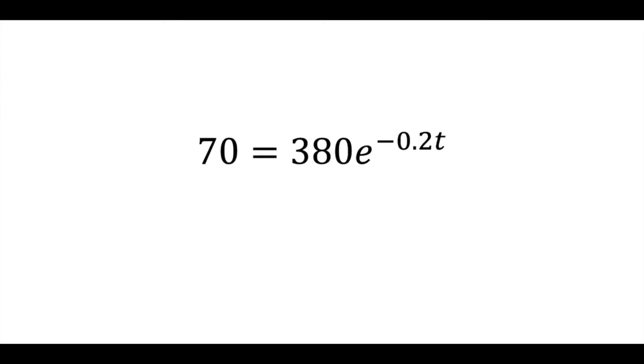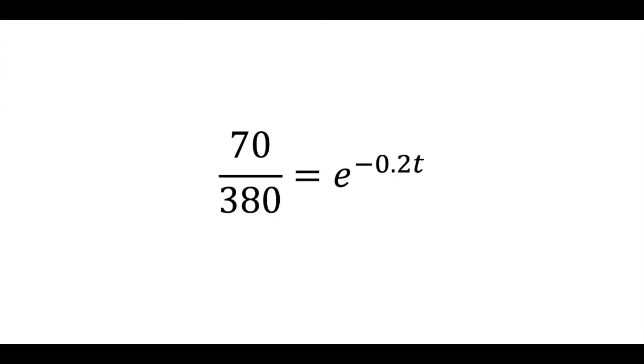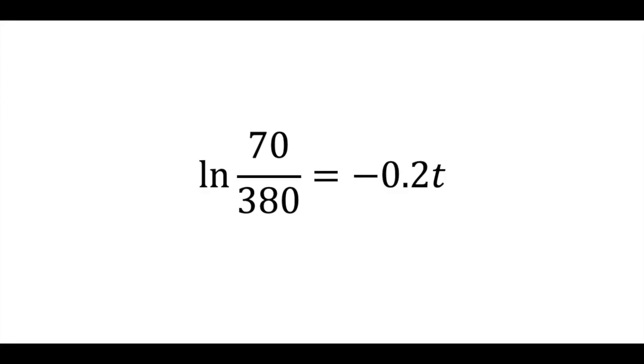Simplify again. 70 equals 380 times E to the negative 0.2T. 70 over 380 is E to the negative 0.2T. Take the ln of both sides again.